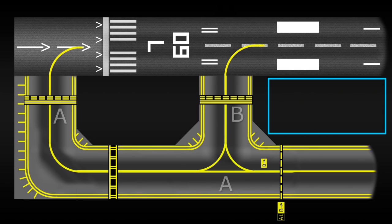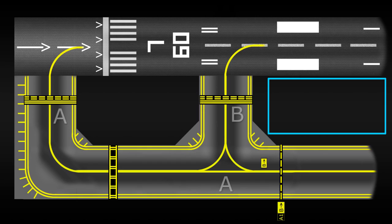So that pretty much covers taxiway-related signs, so let's have a look at runway signs. Now, when a taxiway meets a runway, you will see red signs with white writing.